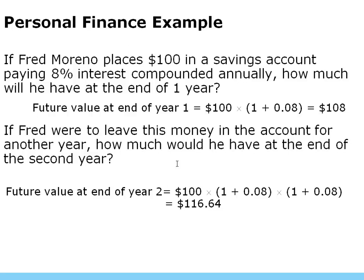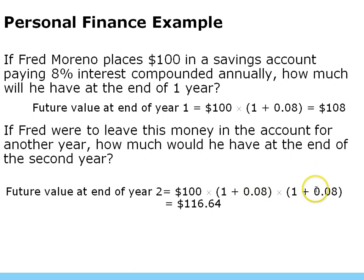Fred places $100 into a savings account that pays 8% interest, compounded annually. How much will he have at the end of year one? Using the future value formula — present value times one plus the rate of interest — in one year he's going to have $108. What if he leaves it in for two years? We compound it twice: it's not $116, it's $116.64, because we're earning 64 cents on the $8 we made the year before.